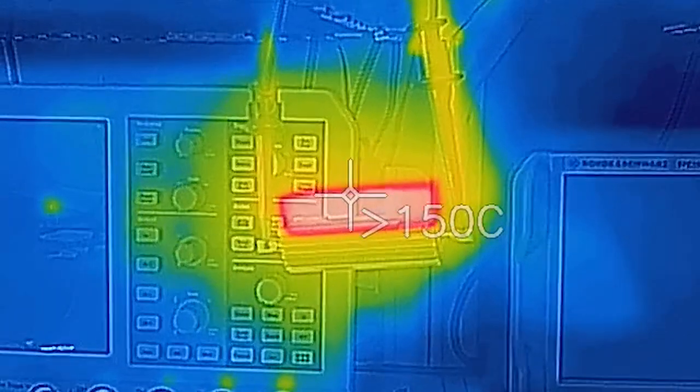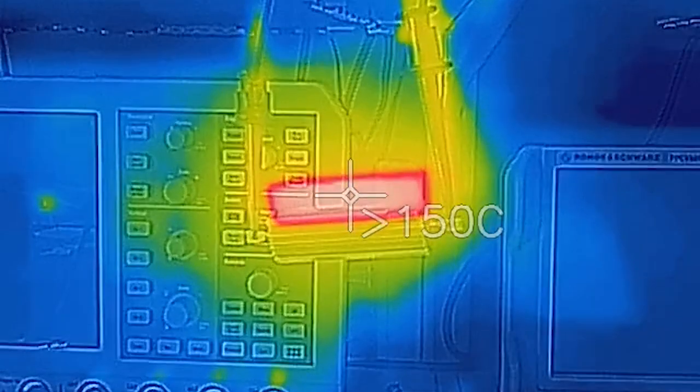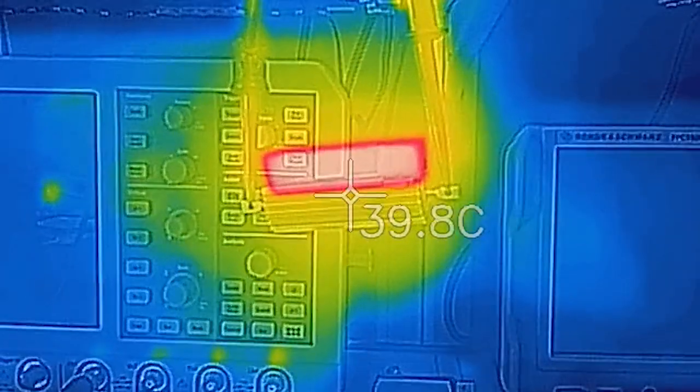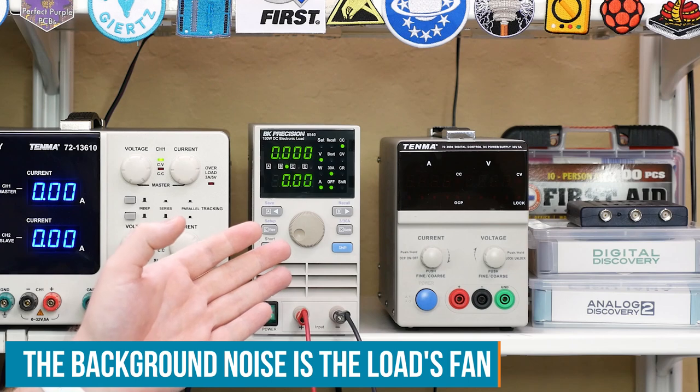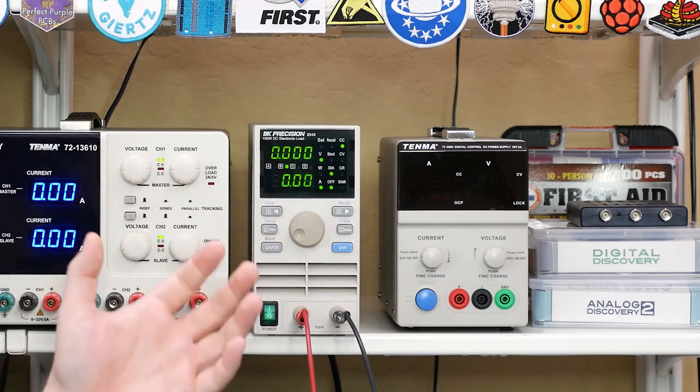The Tenma supply that I'm using can output 32 volts and 5 amps on its adjustable outputs. But those outputs can also be placed in parallel to increase their output current to 10 amps or in series to increase their output voltage to 60 volts. Now putting 60 volts across this resistor causes it to dissipate about 52 watts and get over 100 degrees C. So to keep from burning myself I'm going to use this electronic load instead to demonstrate these features. You can think of this box as an electronically controlled resistor.